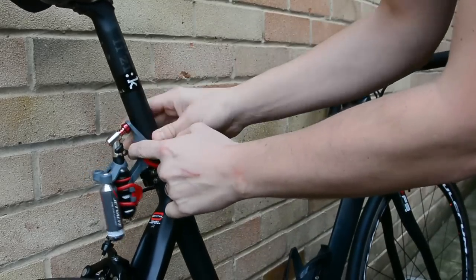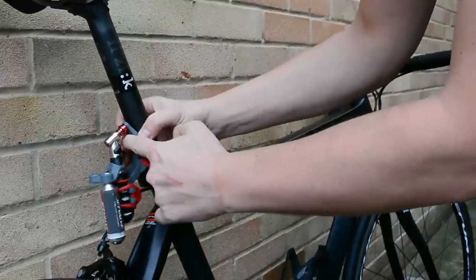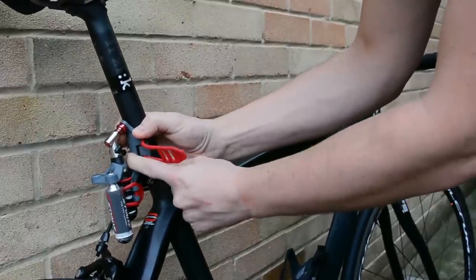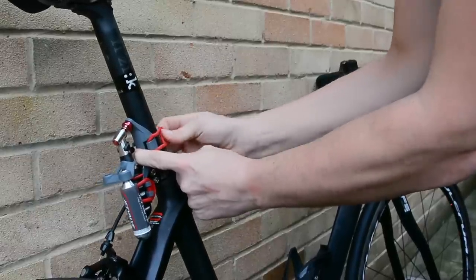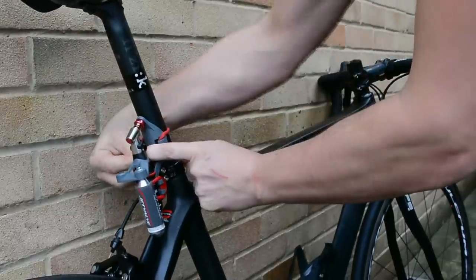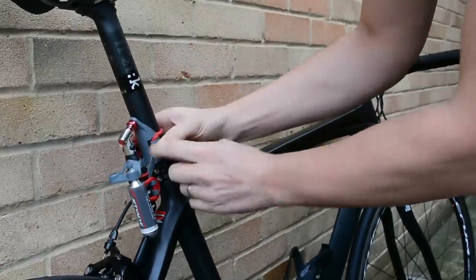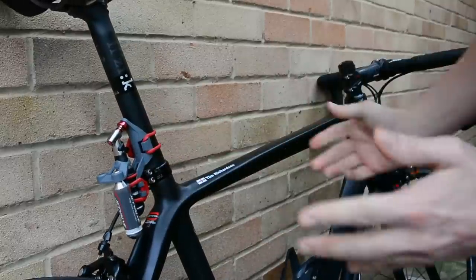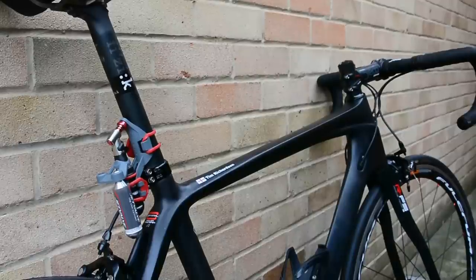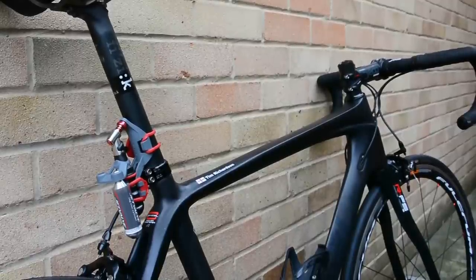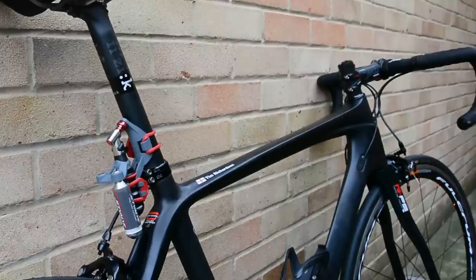So what we'll do is place it onto the seat post. Just place it on there as you can see. Then we just take this and simply ping it round, hold it on, just put it into position there and that's it. Nice and easy, very quick, very secure and handy great way to take the canisters with you while out on a ride.